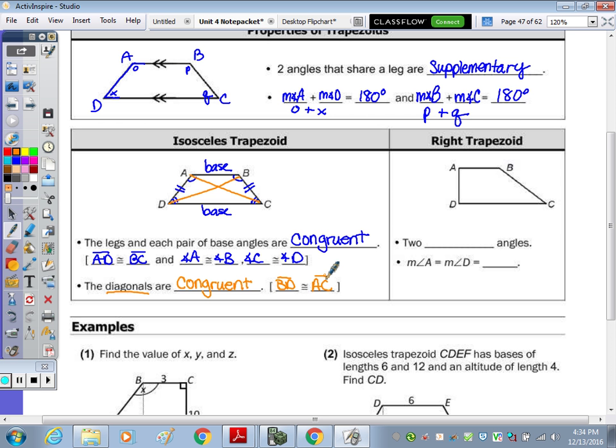And then last, a right trapezoid simply means it has two right angles, okay. So the measure of angle A and D is 90 degrees.